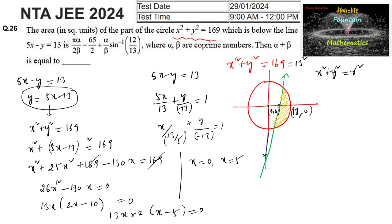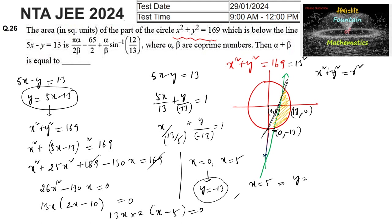The values of x are 0 or x = 5. When x = 0, substituting gives y = -13, so one intersection point is (0, -13). When x = 5, y = 25 - 13 = 12, so the other intersection point is (5, 12).